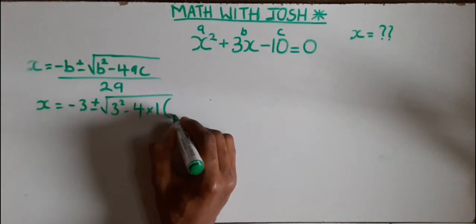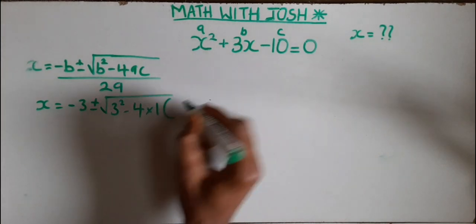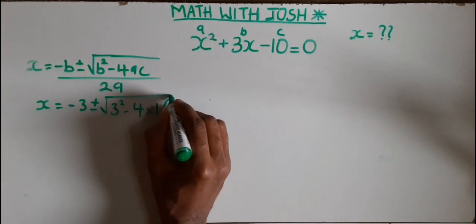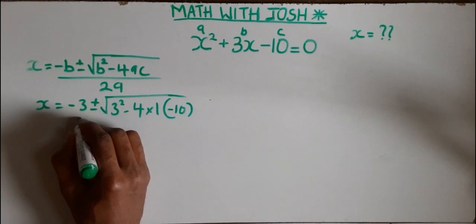In this question, the constant is minus 10. Now we have to replace the letters in this equation with these numbers.